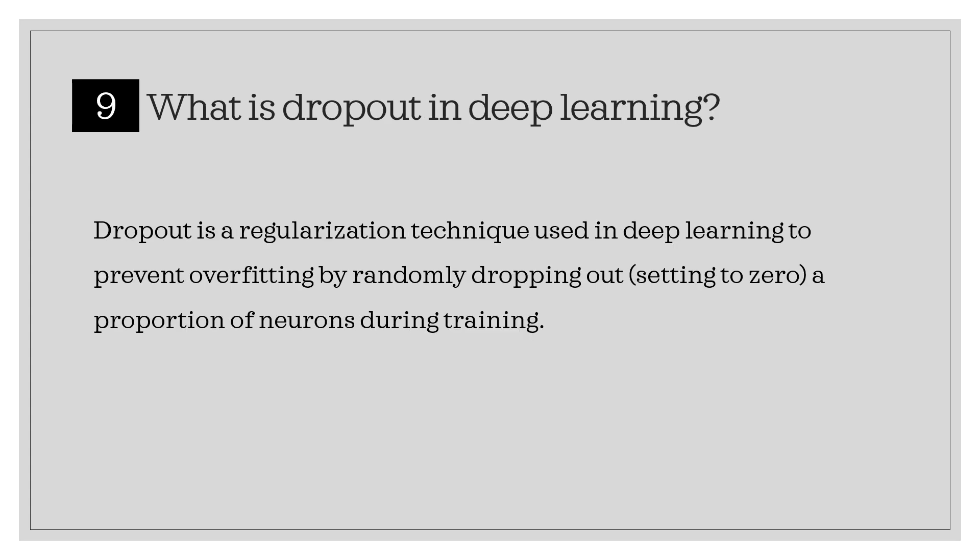What is dropout in deep learning? Dropout is a regularization technique used in deep learning to prevent overfitting by randomly dropping out, setting to zero, a proportion of neurons during training.